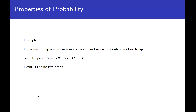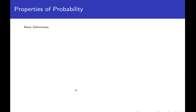Let's look at some different examples of events. The event 'flipping two heads' is just the set {HH} — a subset of the sample space. The event 'flipping exactly one head' is the set {HT, TH}, which is also a subset of the sample space. What about 'flipping three tails'? We're only flipping the coin twice, so that event is the empty set — an impossible event that cannot possibly happen.